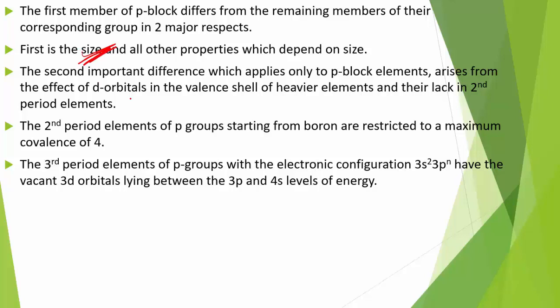The second period P-group elements starting from boron are restricted to a maximum covalence of 4, involving 2S and three 2P orbitals. In contrast, third period P-group elements with electronic configuration 3S²3Pⁿ have vacant 3D orbitals lying between 3P and 4S energy levels. Using these d-orbitals, third period elements can expand their covalence above 4.